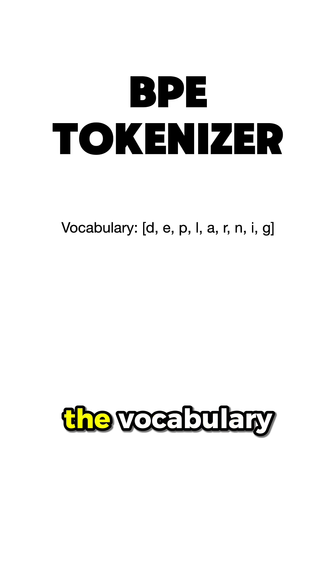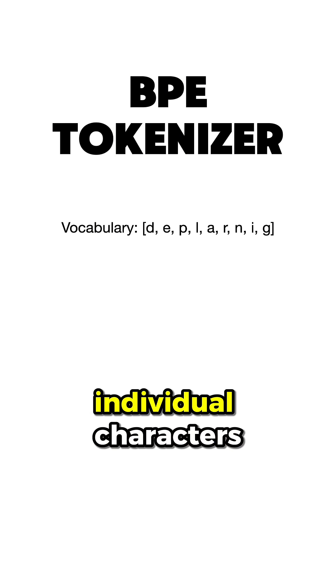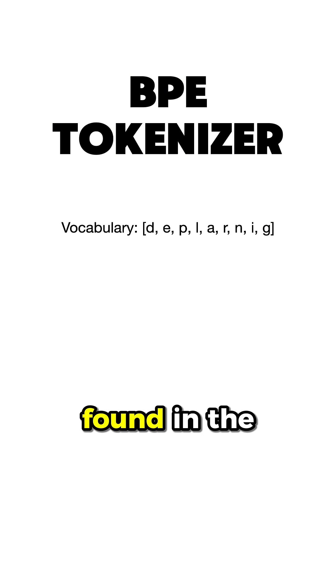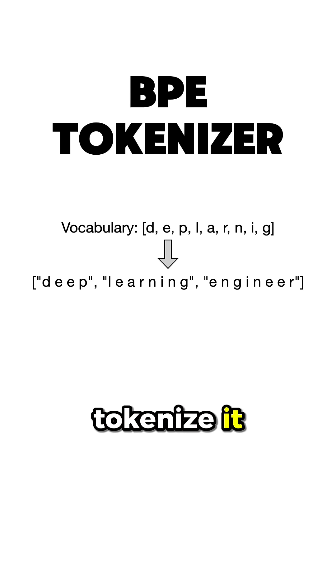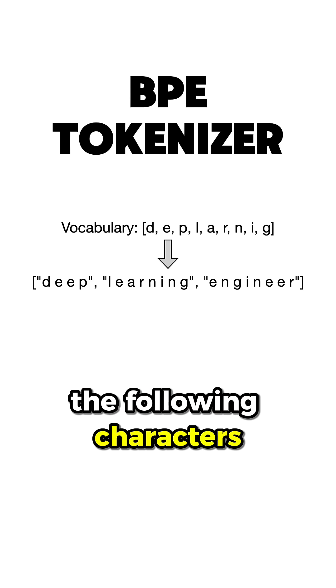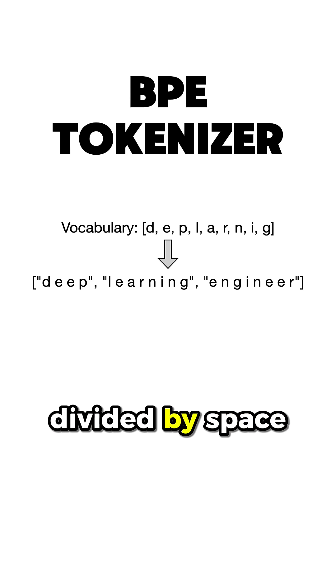Now, we initialize the vocabulary with all the individual characters found in the sentence, and if we were to tokenize it, we would get the following: characters divided by space.